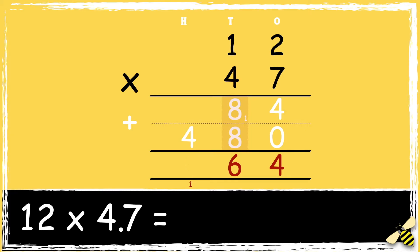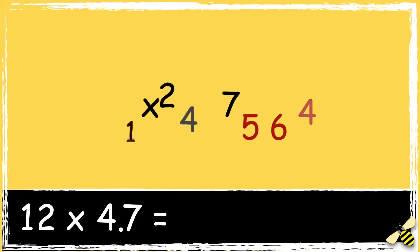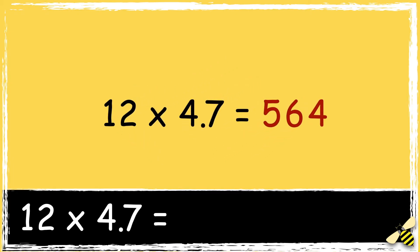We carry the 1 below in the hundreds column as it represents 100, then 4 add 1 is 5. We need to place the decimal point in the answer. To do this we count the number of decimal places in the factors: 4.7 has one digit after the decimal point, so we need to ensure that there is one digit after the decimal point in our answer. So the answer is 56.4.